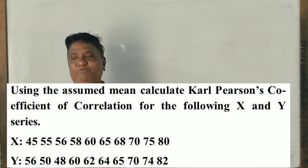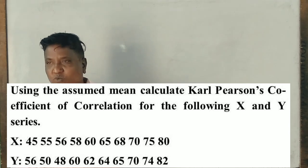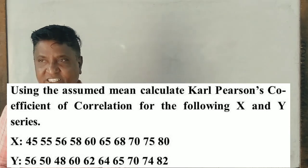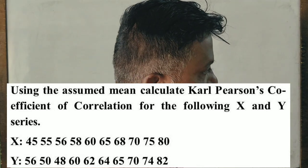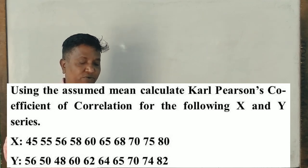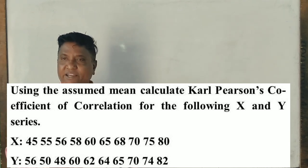For example, the relationship between the age of husband and the age of wife, or the relationship between the marks scored by one class and the marks scored by another class. We can have a relationship between two items or two elements. Using the assumed mean, calculate the coefficient of correlation for the following X and Y series.